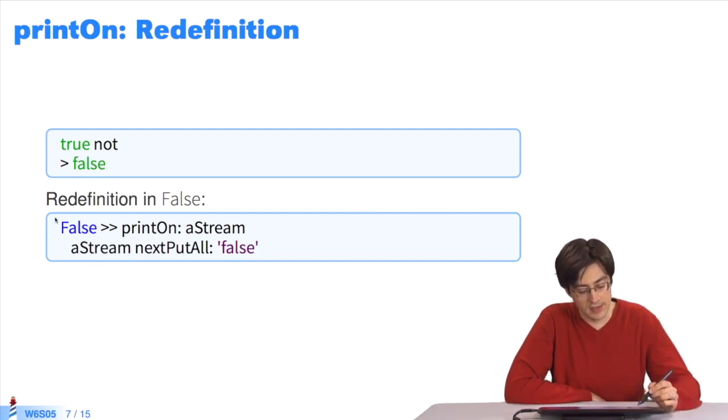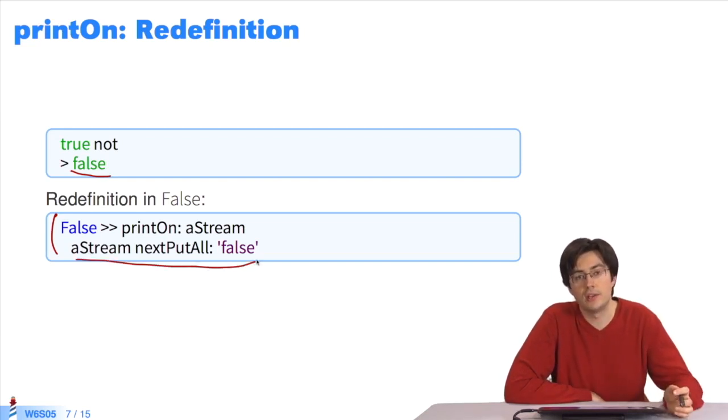This is the case for booleans, for example. If I display false, it will return false. We don't have a false, simply false. For this, we just send the false string of characters in the printOn variable stream. That's a complete redefinition.